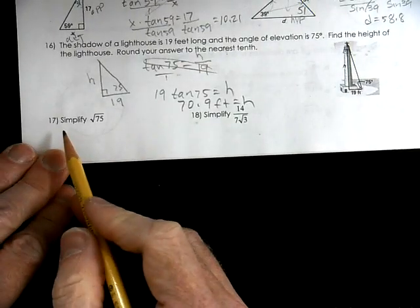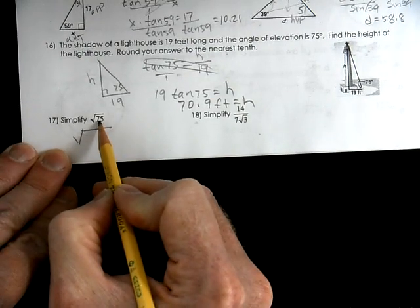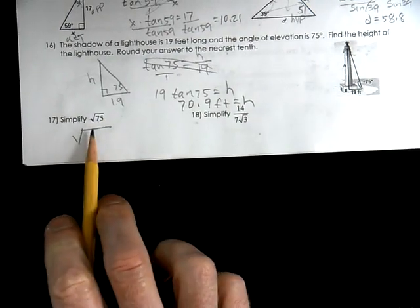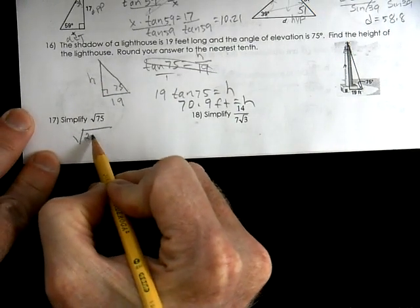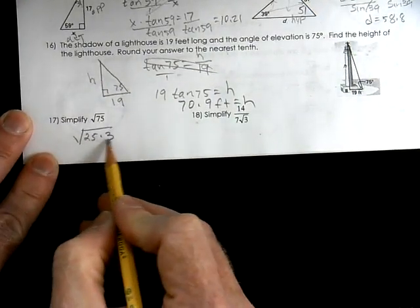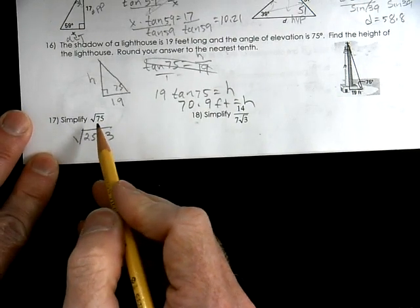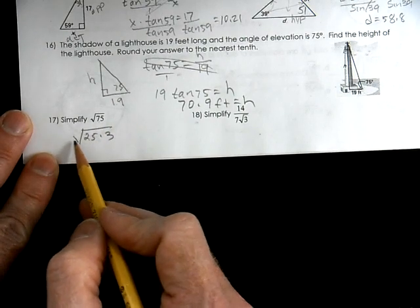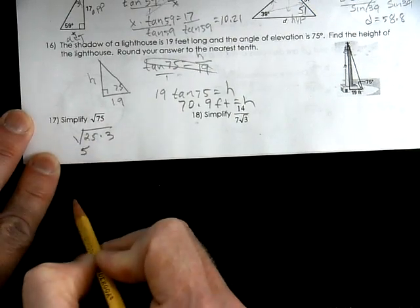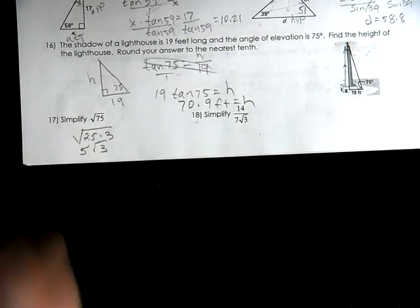To simplify a radical, we break it down into perfect squares. For √75, we identify which perfect square goes into 75 — the answer is 25, since 25 times 3 equals 75. The square root of 25 is 5, so √75 simplifies to 5√3.